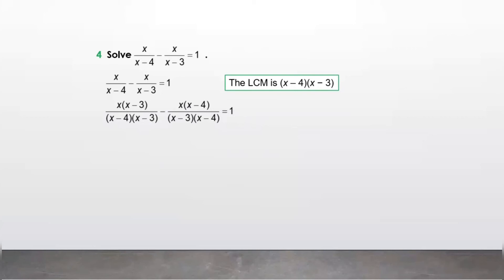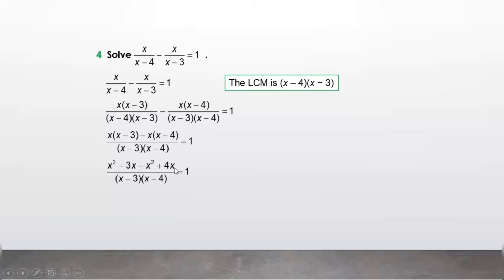So we get x(x minus 3) upon (x minus 4)(x minus 3) minus x(x minus 4) upon (x minus 3)(x minus 4). When the denominator is the same, we write it once and simplify the numerators. Expanding: x times x is x squared, x times minus 3 is minus 3x, minus x times x is minus x squared, and minus x times minus 4 is plus 4x.